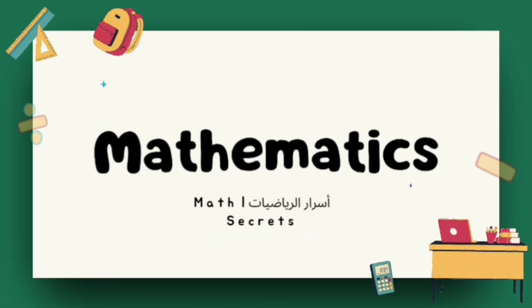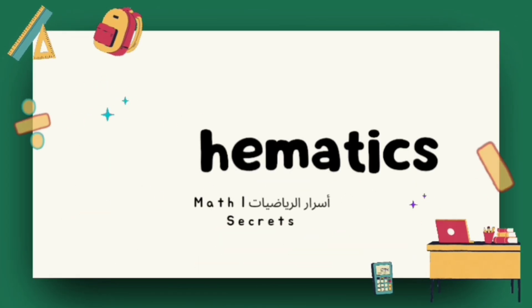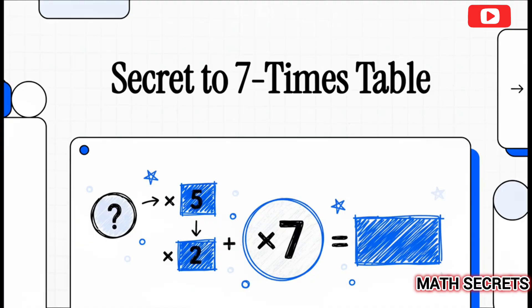All right, let's just jump right in. We're about to tackle one of the most frustrating parts of mental math. You know the one I'm talking about, the seven times table. But don't worry because by the end of this, you're going to have a surprisingly simple trick to master it for good.